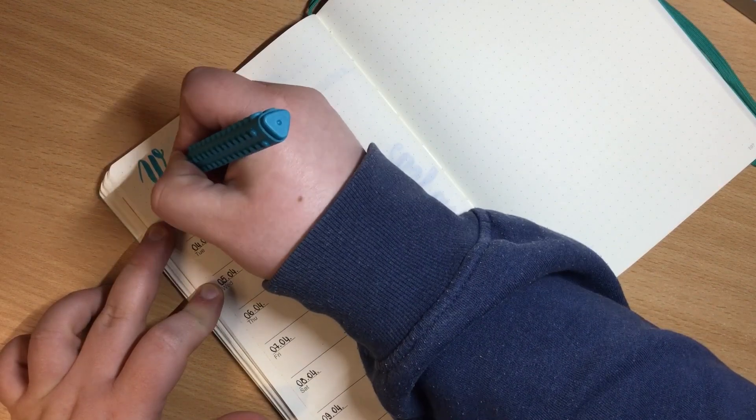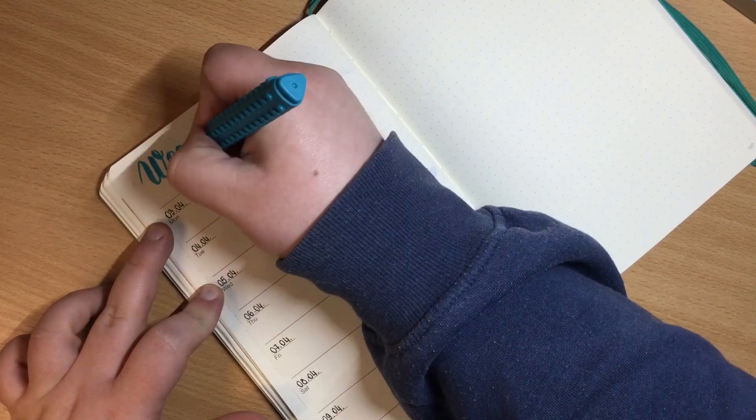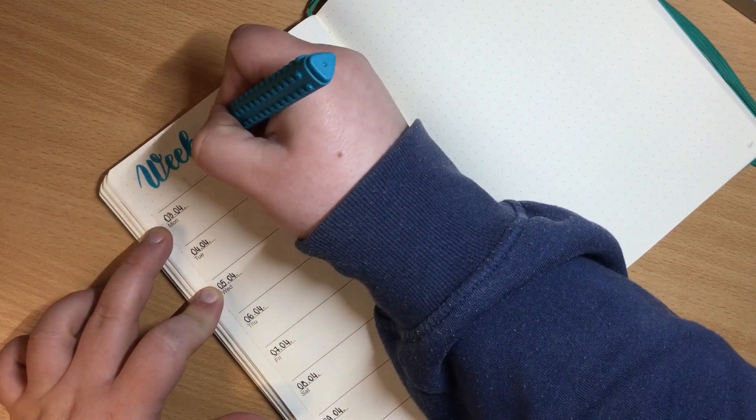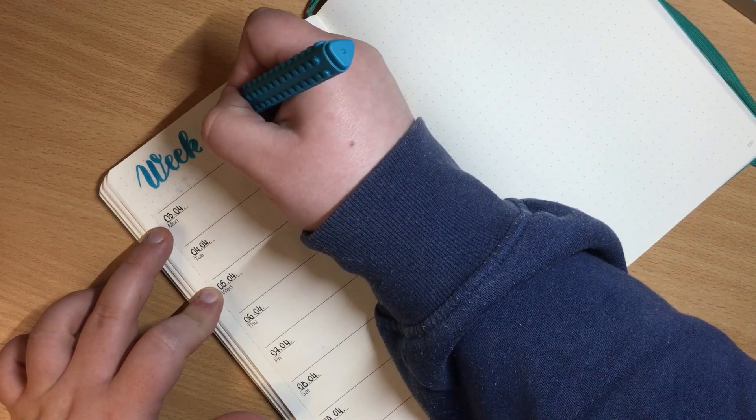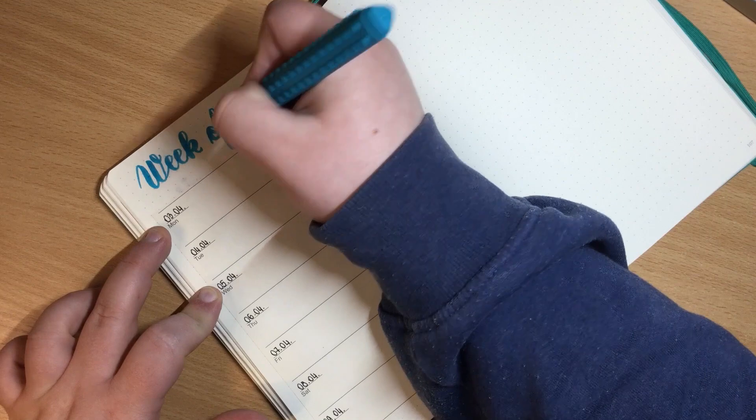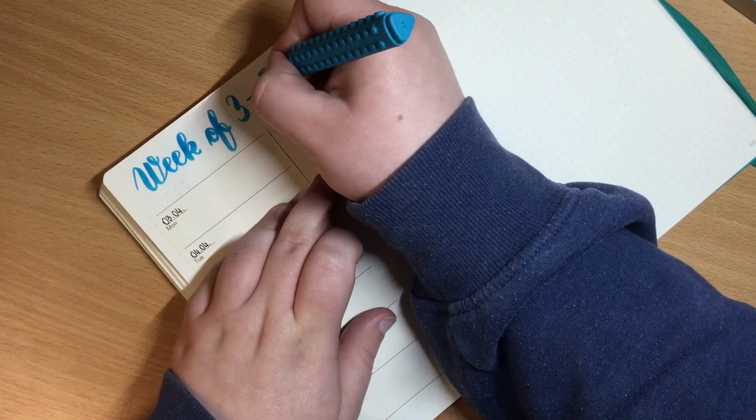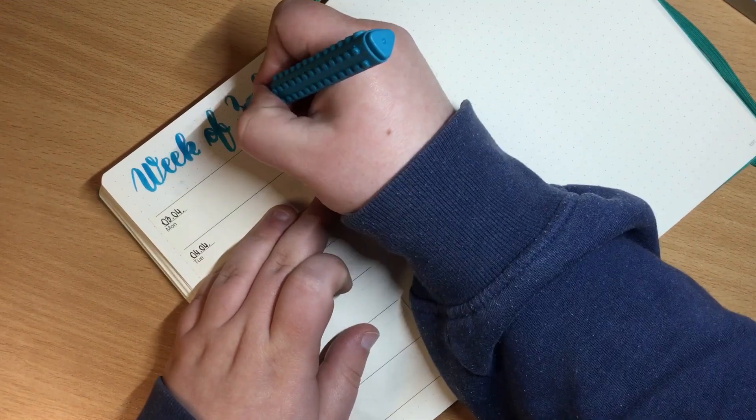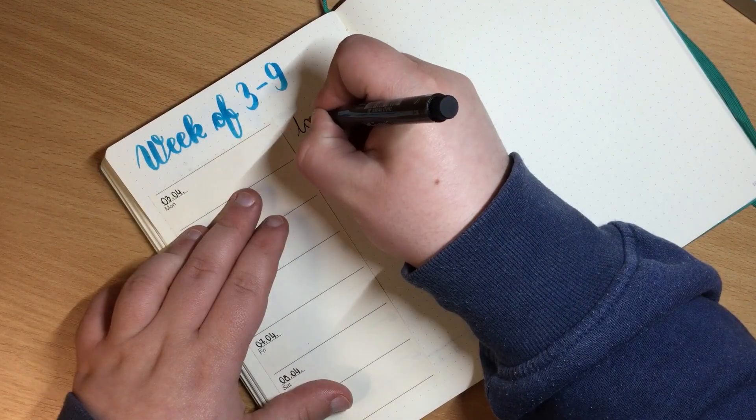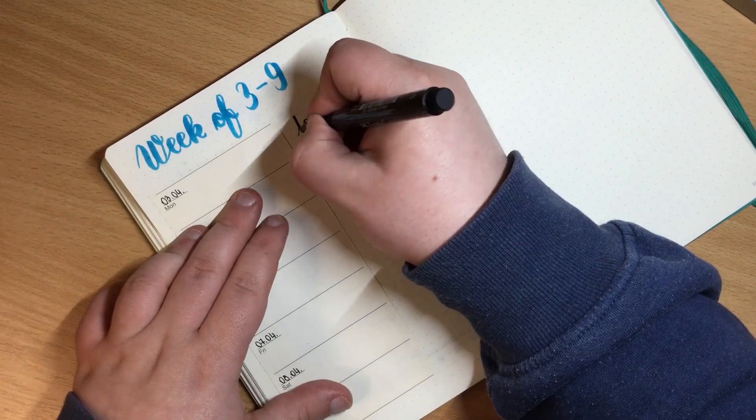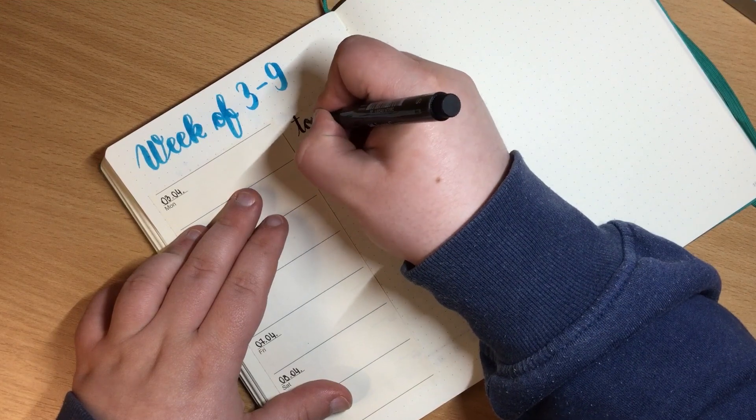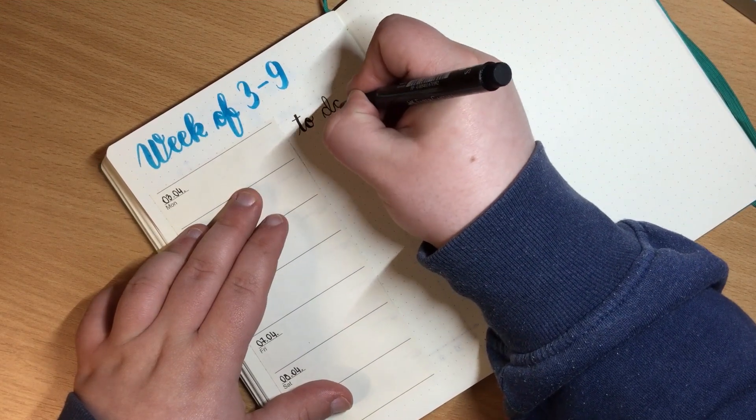And also I'm using another Artline sticks brush pen in the color turquoise. And besides my weekly overview I will have a master to-do list where I can jot down all my to-dos during the week.